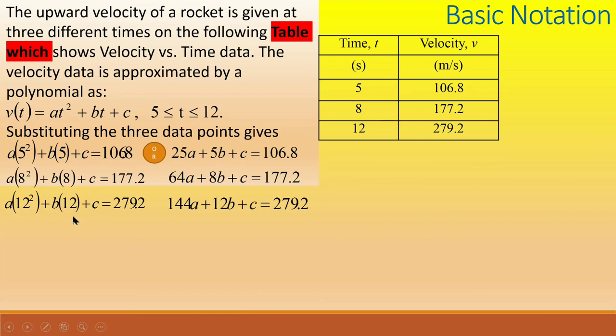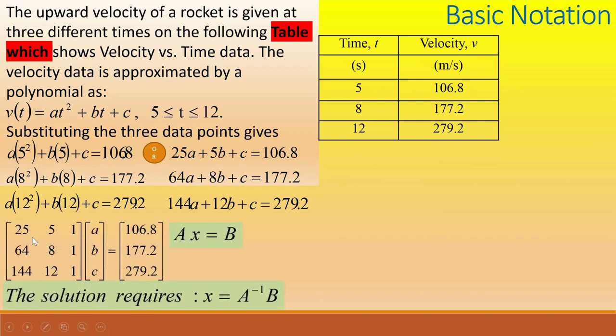Substituting the three data points values from the table gives the three equations on the left and simplifying gives the three equations on the right. In matrix form, this set of equations can be rewritten simply as the matrix A multiplied with the column vector x with the unknown entries A, B and C. The result is the velocity vector B. By finding the inverse of matrix A and then multiplying with column vector B, we find the column vector of unknowns.